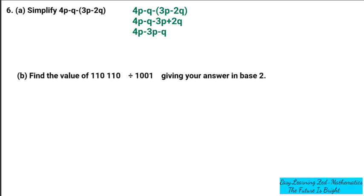Then I'm going to find the difference of 4p and 3p, which will be p. Then negative q plus 2q will give me q, positive q. So it's going to be plus q.